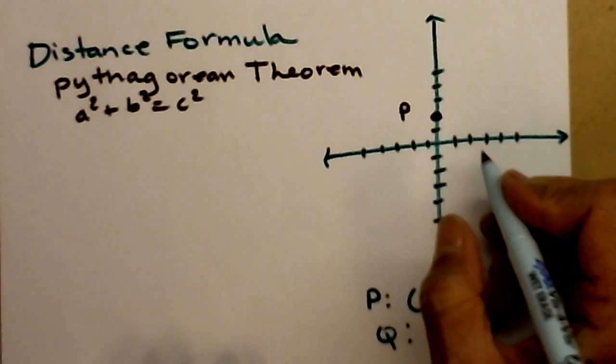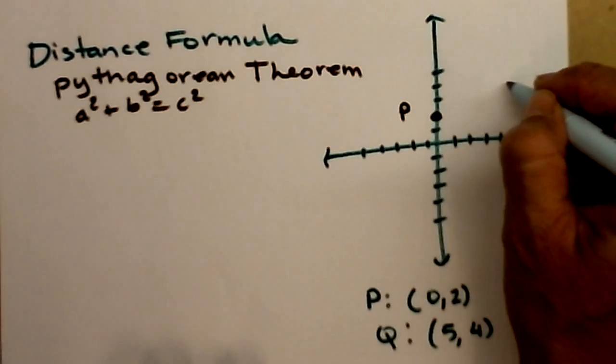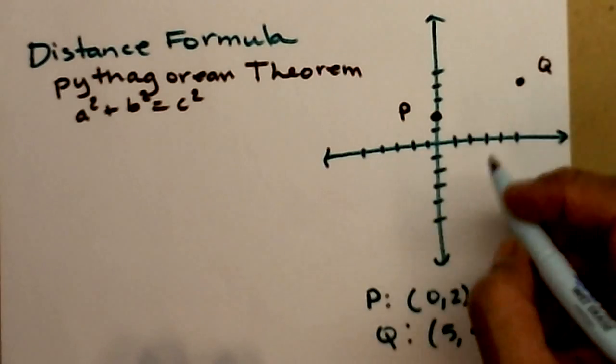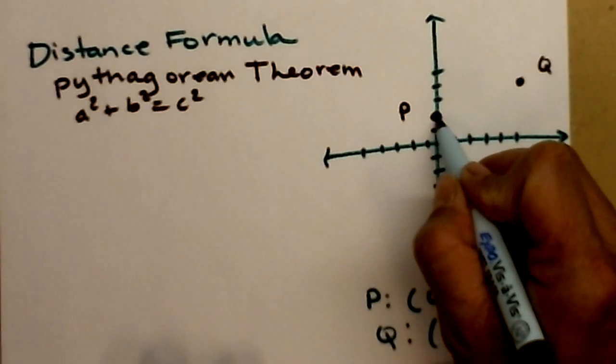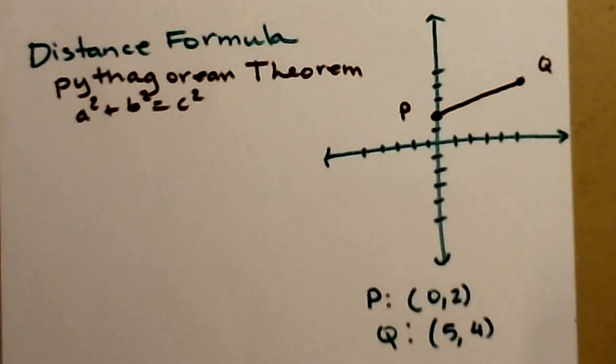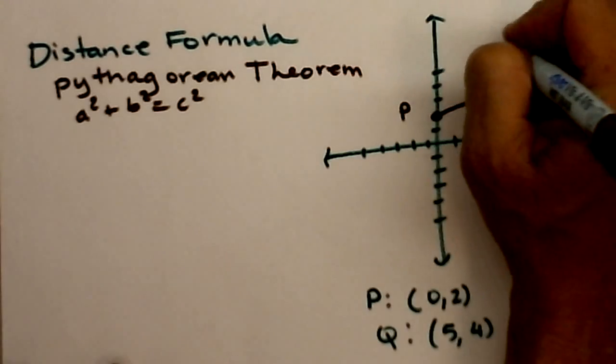Point Q, I'm going to go out 5. 1, 2, 3, 4, 5. And up 4. That was 2, 4. Somewhere about in there. So the distance formula, instead of giving me the midpoint of the line segment, is going to give me the length of the line segment. So distance formula gives me this length right here.